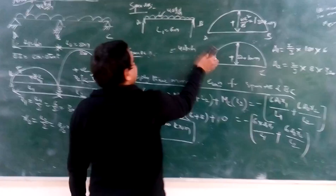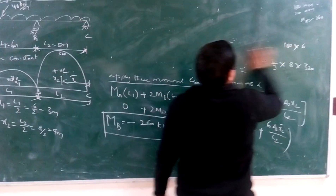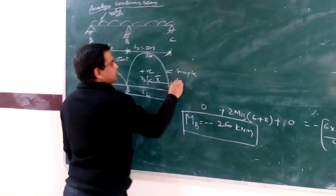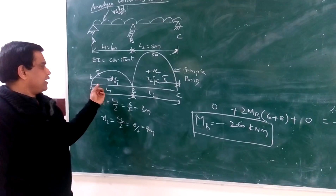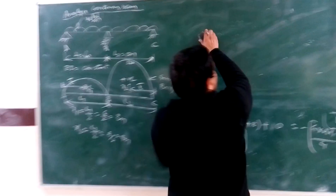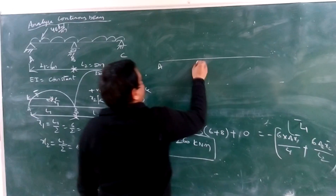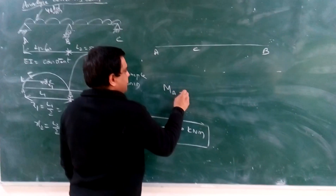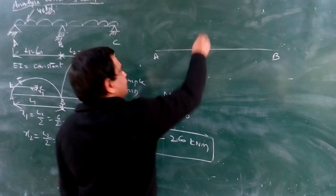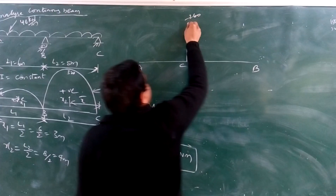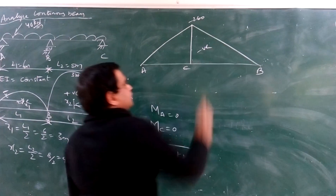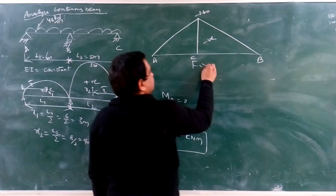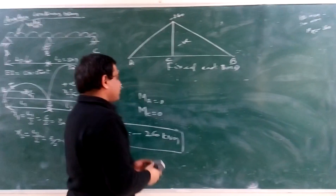Next, we draw the combined bending moment diagram. The free bending moment diagram is drawn first — this is the simple bending moment diagram when the ends of the beam are simply supported. Then we draw the fixed bending moment diagram. MA is 0, MB is minus 260, and MC is 0. The free bending moment diagram is positive, and the fixed-end bending moment diagram is negative.